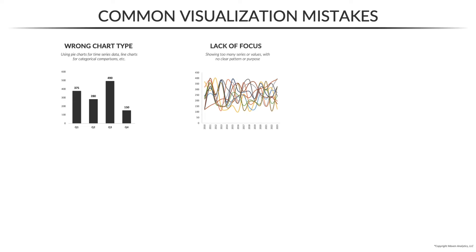Next we have lack of focus. Here we've got a line chart with a ton of different series plotted to the point where it just looks like spaghetti. This is technically the correct type of visual — we're looking at trends over time — but it doesn't communicate any clear pattern or serve any clear purpose.